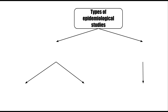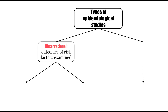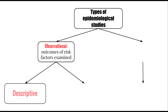There are a number of different types of epidemiological studies to look at. Firstly, we have observational epidemiological studies that look at the outcomes of the risk factors examined. Observational means we look at the population and try to determine what risk factors may be causing a particular disease, or if there's an outbreak, what are the similarities between the different areas.